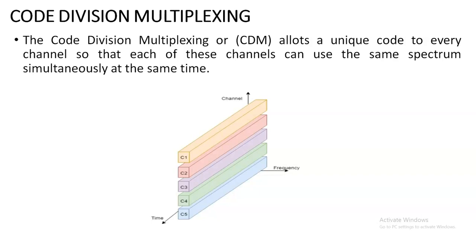The last type is code division multiplexing. Similar to frequency division multiplexing, all frequencies share a common medium, but here each frequency is multiplied with a unique code. Each frequency is allocated a unique code and no code is repeated. When multiplied with the unique code, the frequency is converted to another value — a kind of coding and decoding. At the multiplexing side, a unique value is allocated and all frequencies are combined and passed through the common medium. At the demultiplexing side, the same unique code is used to separate each frequency and give the result.